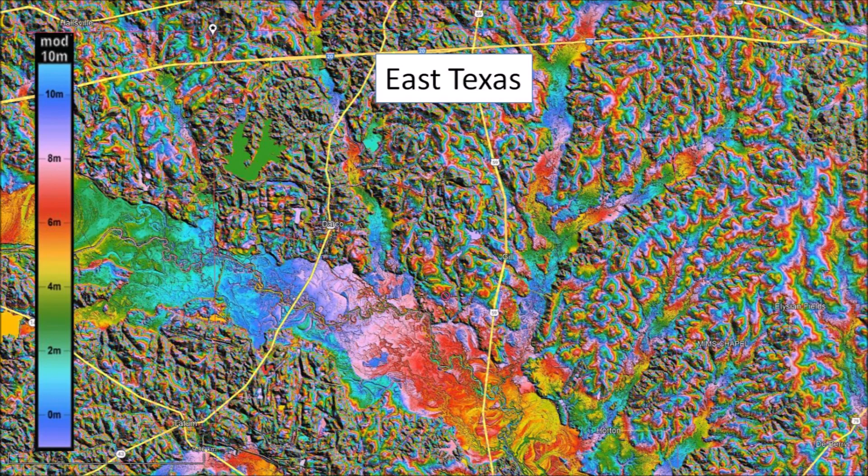It is not easy to find Carolina Bays in East Texas. The terrain has many hills and there are very few flat areas with sandy ground that could have preserved the bays. The only relatively flat areas in East Texas are the floodplains of the rivers, but any bays that formed in this terrain would have been washed away soon after their formation.